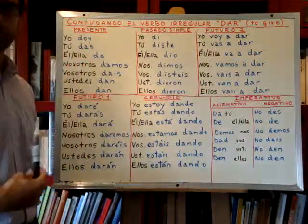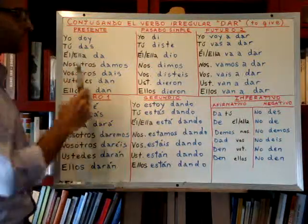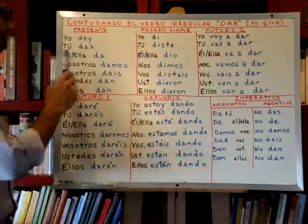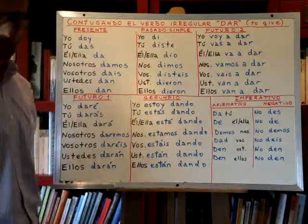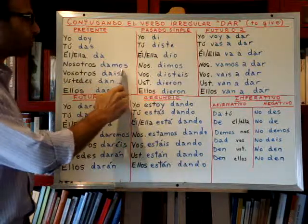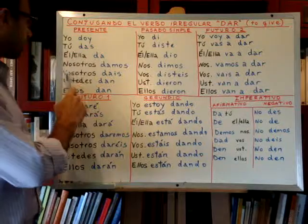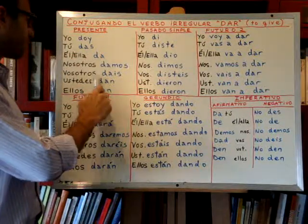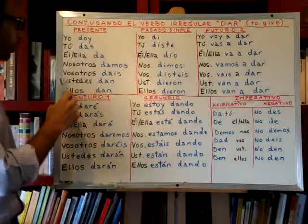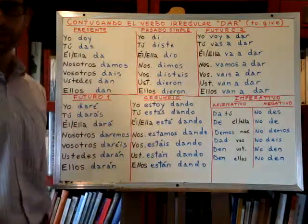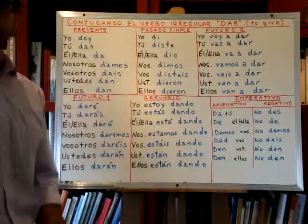In the present tense: Yo doy — I give. Tú das — you give. Él da or ella da — he or she gives. Nosotros damos — we give. Vosotros dáis — you plural give. Ustedes dan — you plural give. And ellos dan — they give.